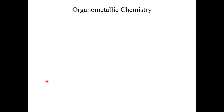Today I would like to start the last chapter of this course, which will be about organometallic chemistry. Organometallic chemistry is an important subset of coordination chemistry. Organometallic compounds also play a very important industrial role. As part of this chapter, you will also learn about industrial applications of coordination compounds.